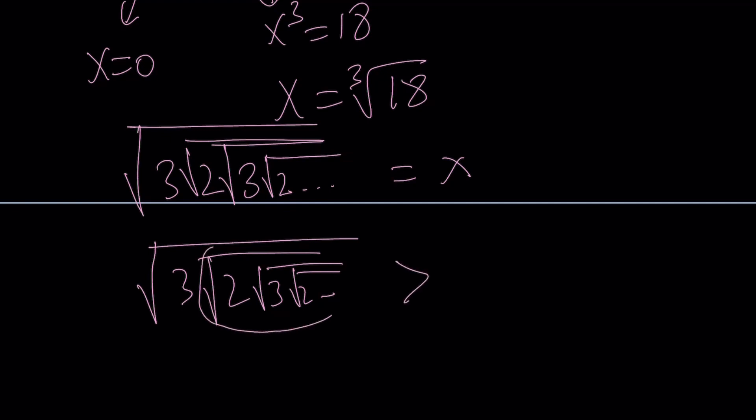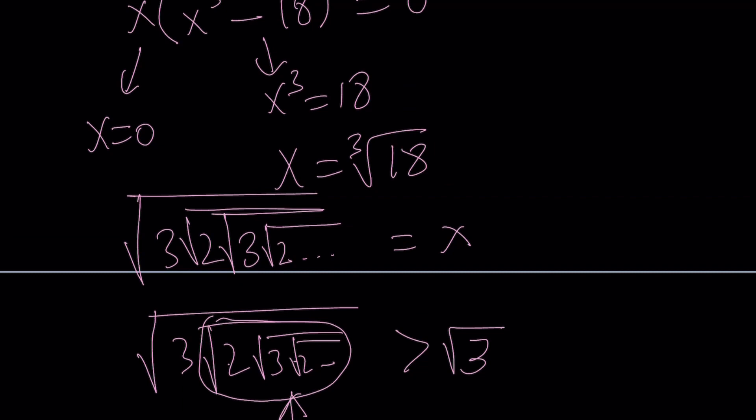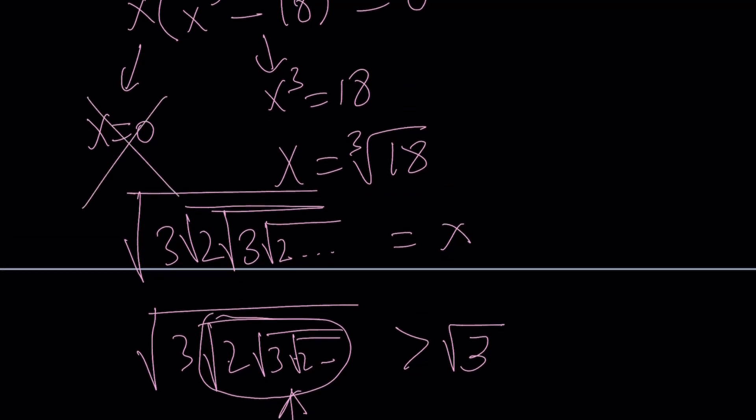Now, how do I know that this expression here is greater than square root of three? I know that because look at this. This expression is greater than one, right? How do I know that? It's the square root of two times something. Obviously, inside the radical, the expression, this expression is greater than square root of two. Therefore, it's greater than one. When you multiply by three, the product is going to be greater than three. Therefore, this is greater than square root of three. So there is no way x can be zero. Obviously, it's a positive quantity. So we're going to discard that and go with the other solution, which is the cube root of 18.